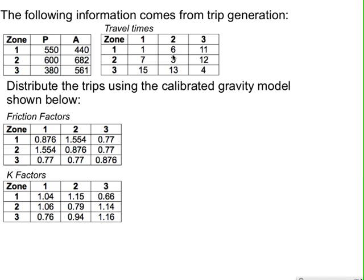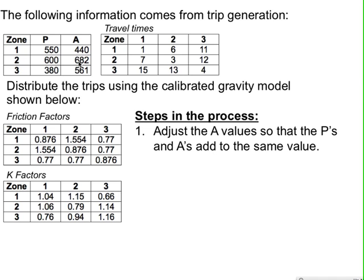The friction factors are based on the travel times between zones — generally, the higher the travel time, the higher the friction factor. The K factors are used to adjust trip interchanges based on socio-economic factors. In applying the gravity model, we assume a closed system with just three zones, so the number of trips produced must equal the number of trips attracted — the system must be consistent.